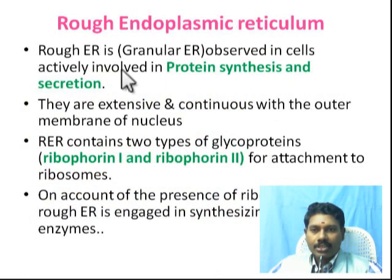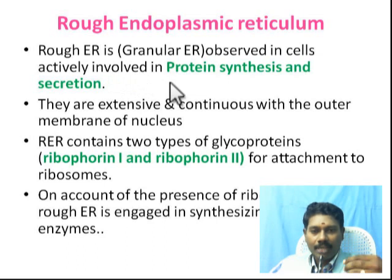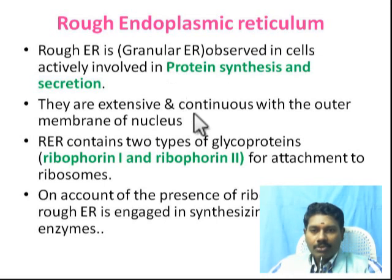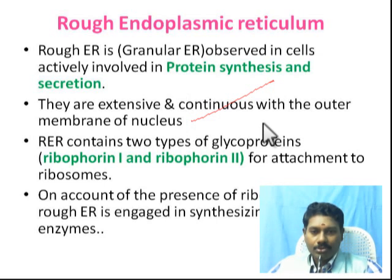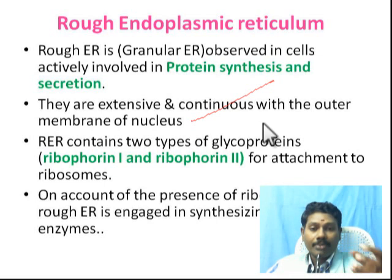Rough ER is due to the presence of granular ribosomes and it is actively involved in protein synthesis and protein secretion. Ribosomes play a very important role — they will produce protein. Rough ER is also extensively continuous with the outer membrane of the nucleus, so the nuclear membrane is immediately adjacent to rough ER.